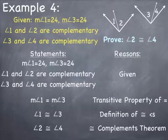It can help to work this out on the side: if the measure of angle 1 is 24 and angle 2 is complementary to it, then the measure of angle 2 equals 66. Similarly, if angle 4 is complementary to angle 3 which is 24, then angle 4 would also be 66 because it has to add together with 24 to equal 90.